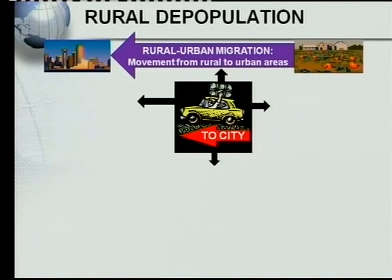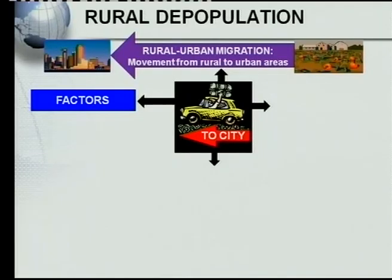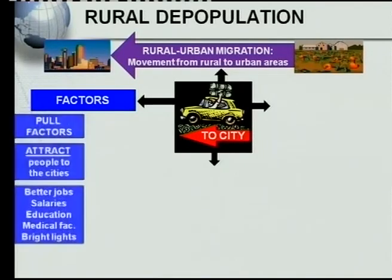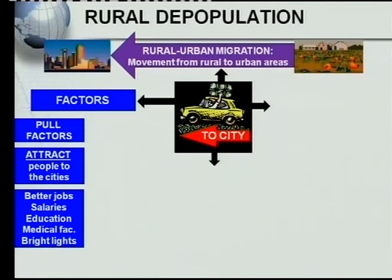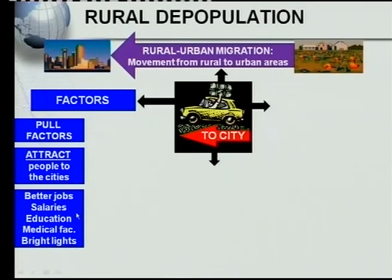The following question is why. Why do we get this movement of rural-urban migration? That's also a very easy question, because it has to do with, firstly, pull factors. Pull factors are the factors that attract people to the cities. What attraction can we get in the cities? You've got better jobs, better salaries, better education, better medical facilities, and of course the bright lights of the city that attract young people — going to discos, enjoying nights out and all that type of stuff.